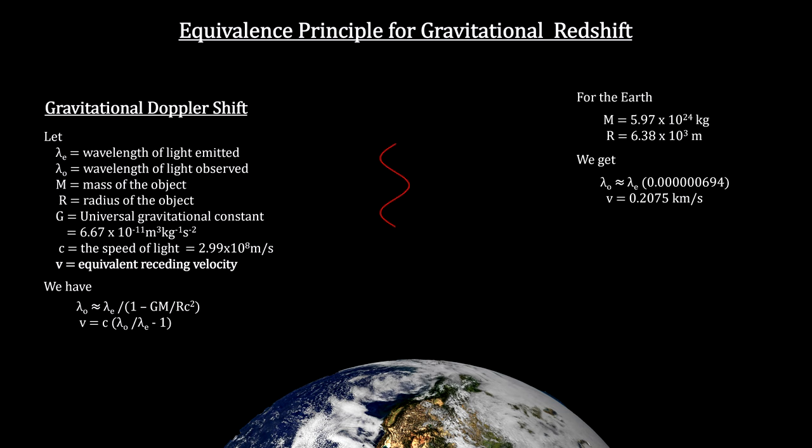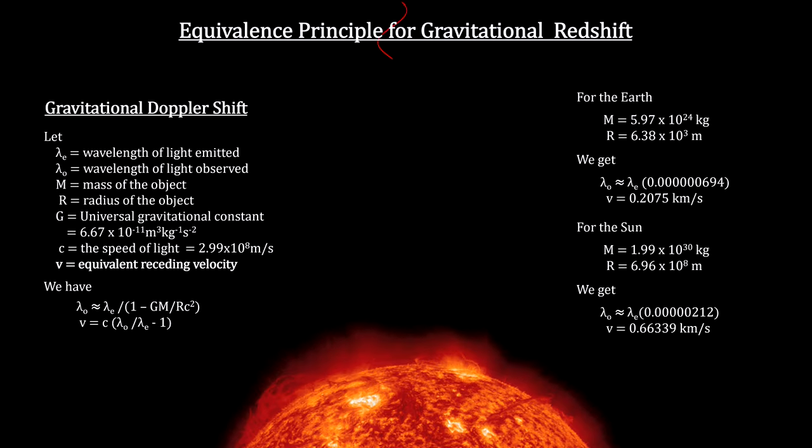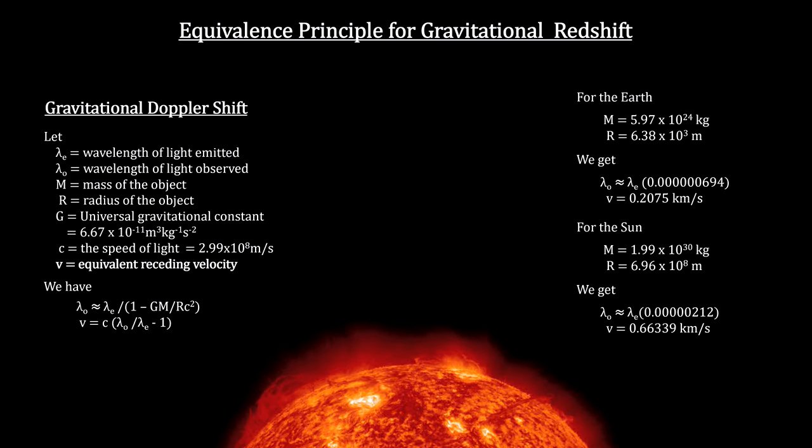Here's the gravitational redshift for the Earth, and the Sun with triple the Earth's mass-to-radius ratio.